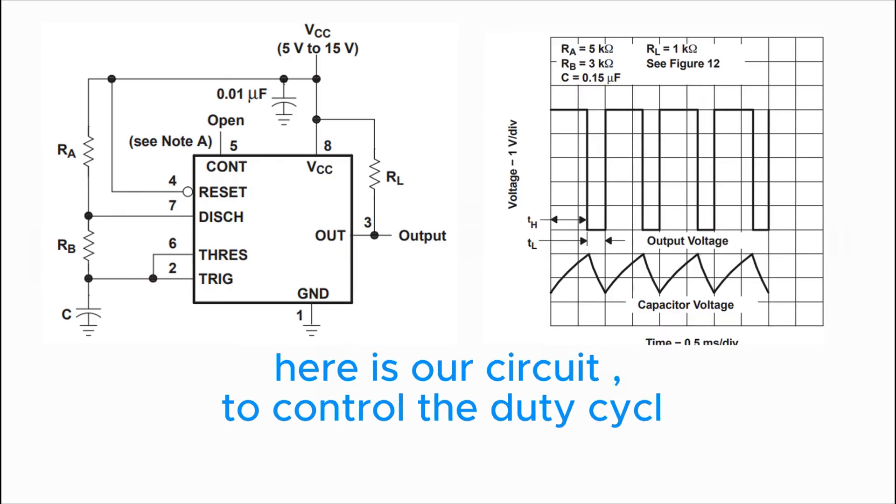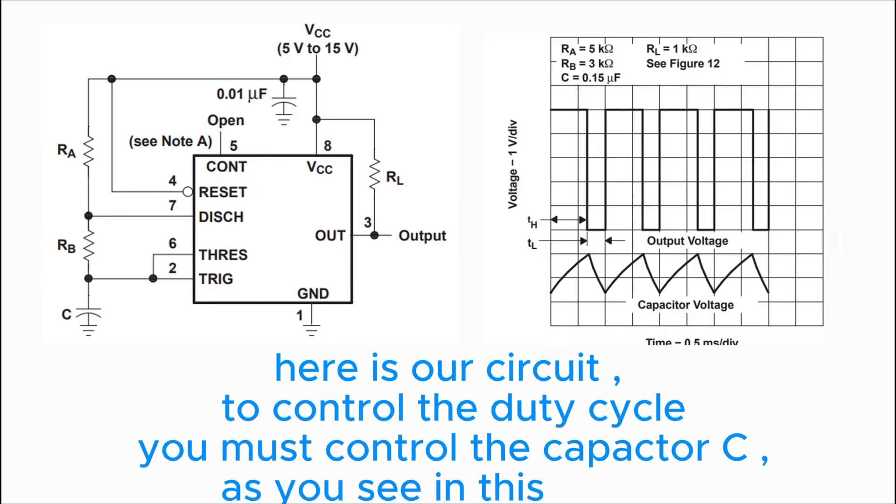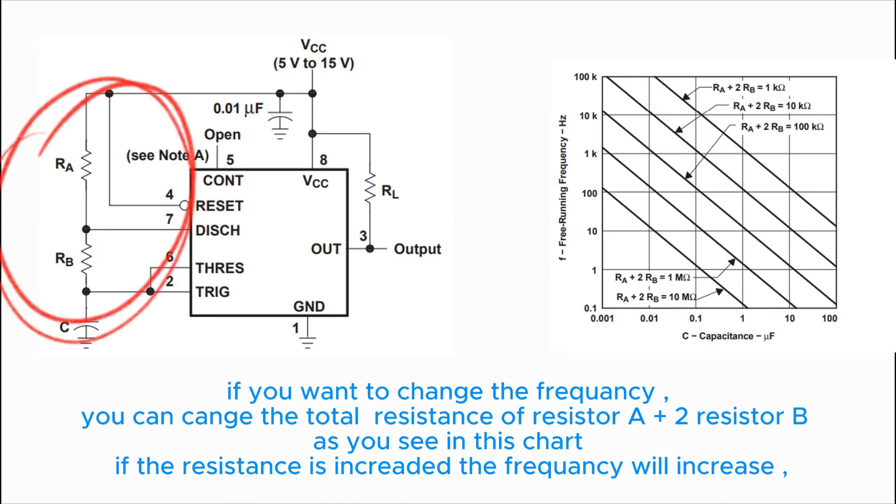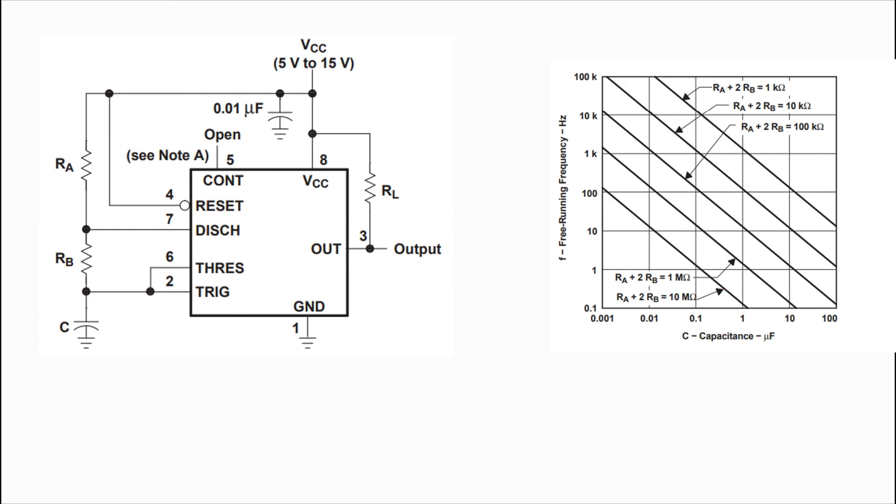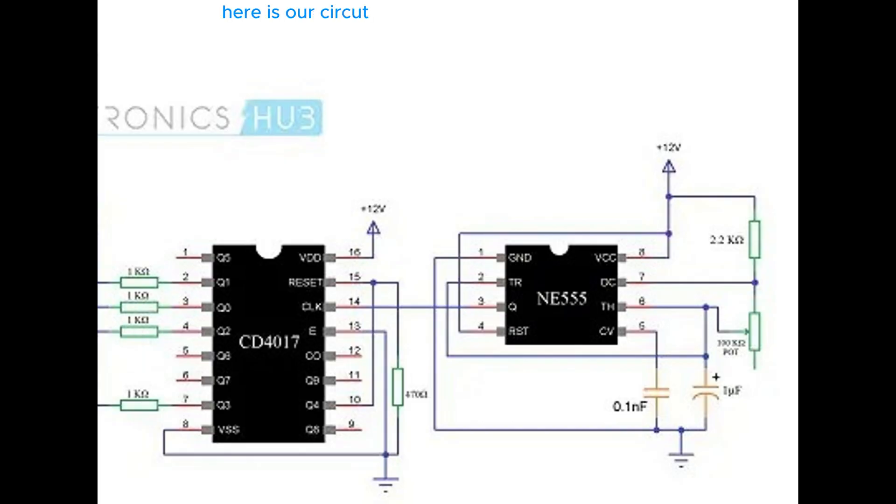This is our circuit. To control the duty cycle, you must control capacitor C. As you can see in this diagram, if you want to change the frequency, you can change the total resistance of resistor A plus 2 resistor B as you see in this chart. If the resistance is increased, the frequency will increase. Here is our circuit connection. Let's start to connect it step by step.